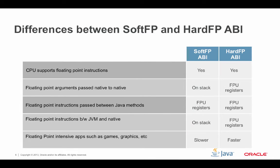Looking at the difference between soft floating point and hard floating point ABI: first, the CPUs actually support floating point instructions in both cases. Floating point arguments are passed native to native. On the soft floating point ABI, they're passed on the stack, which means conversions are required to move to the floating point unit registers. Whereas on the hard floating point ABI, they're just passed directly on the FPU registers.